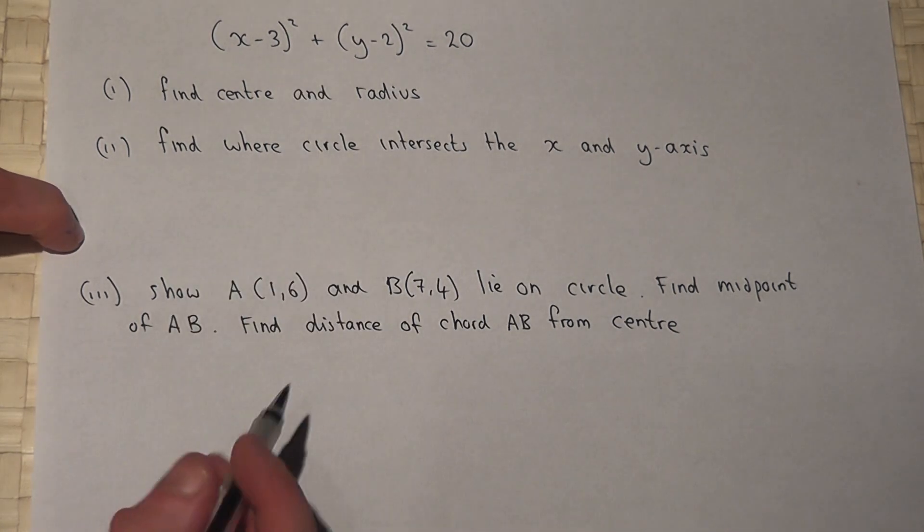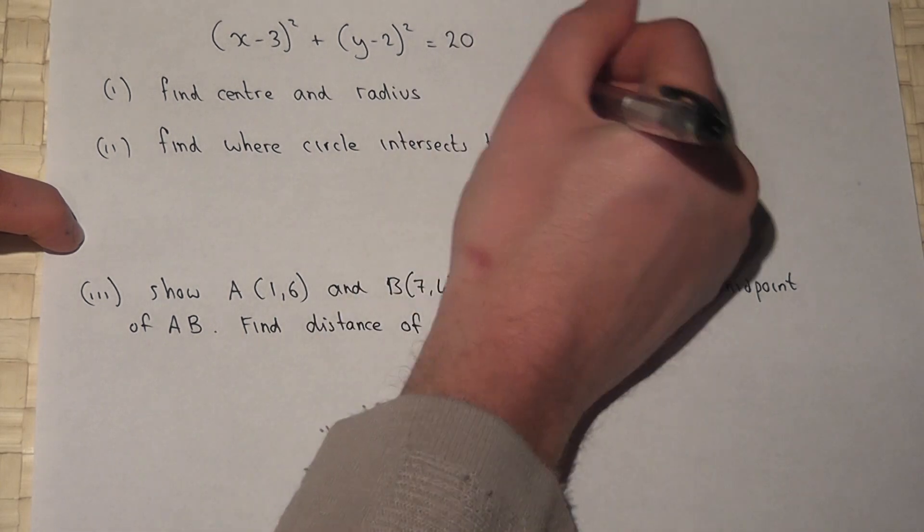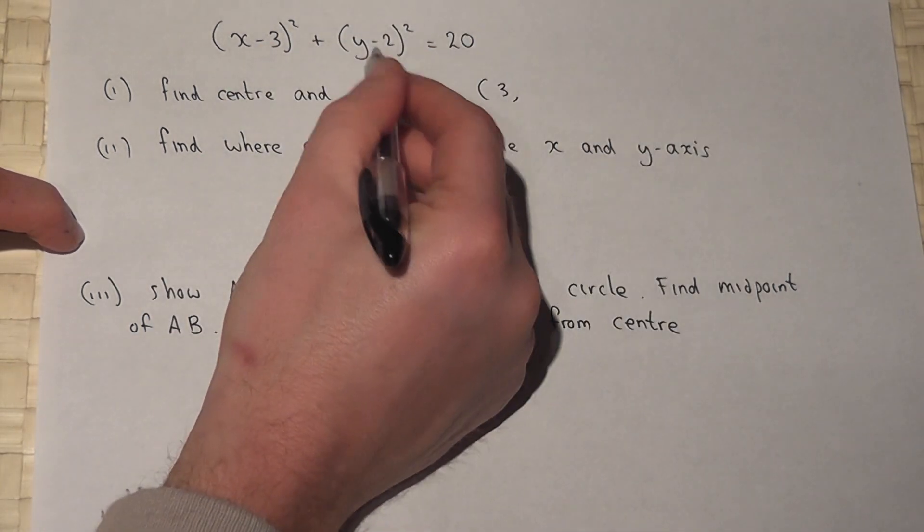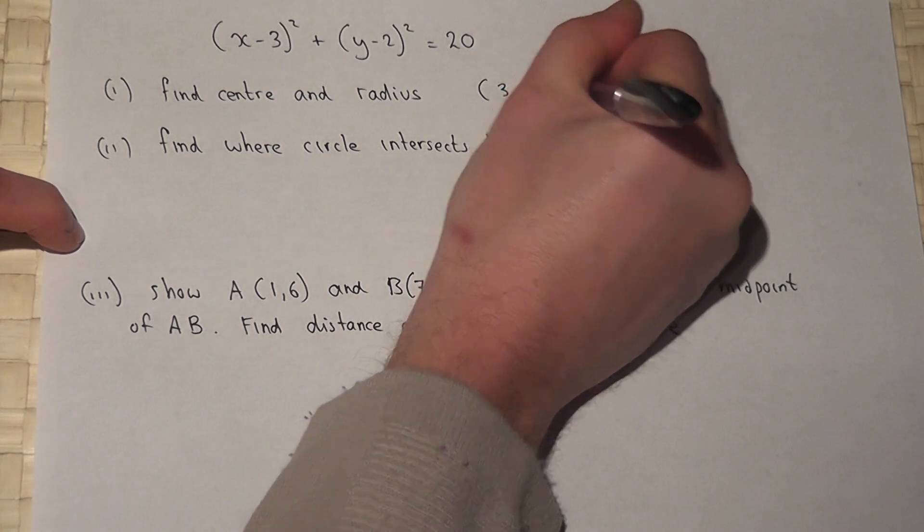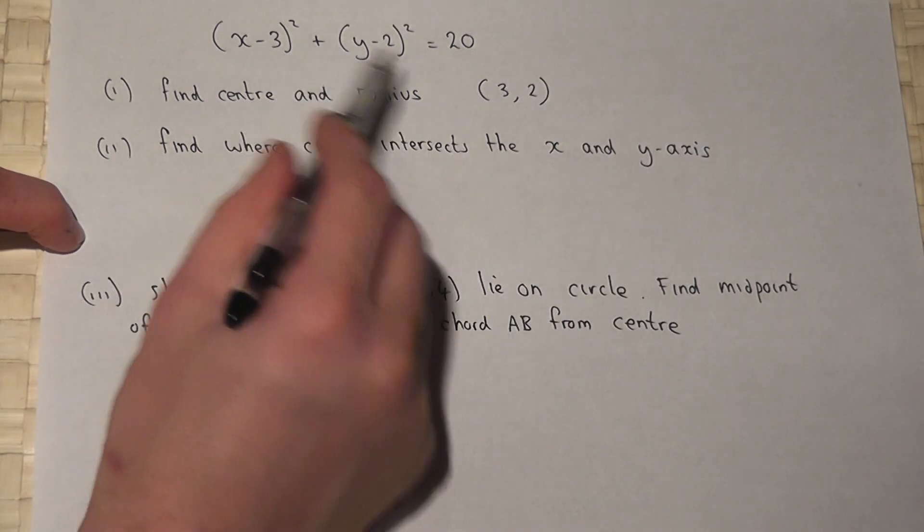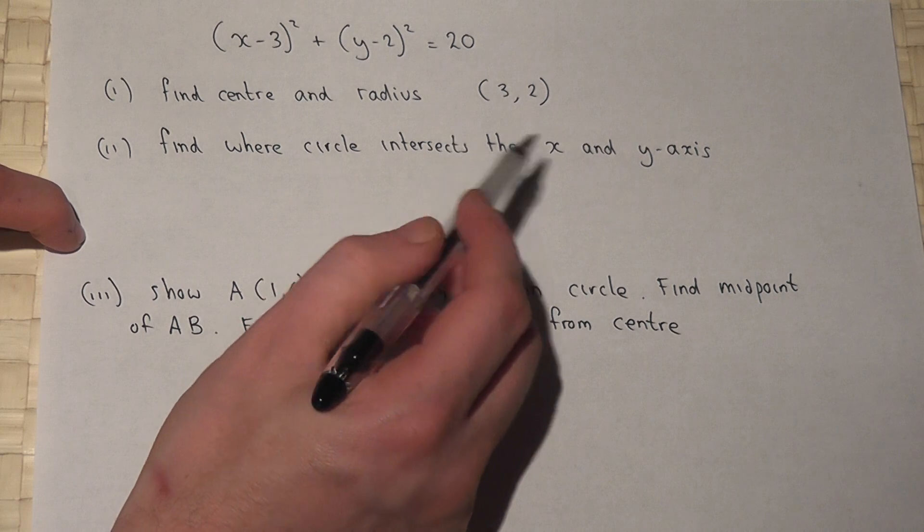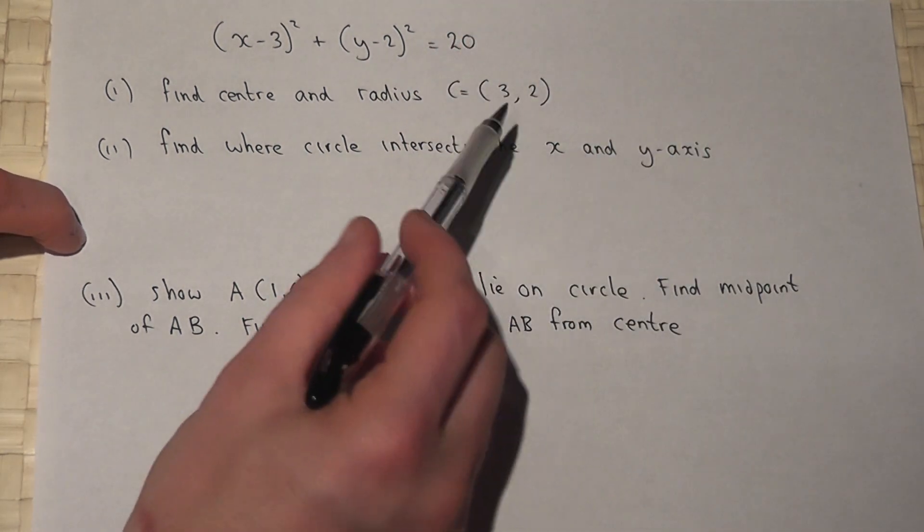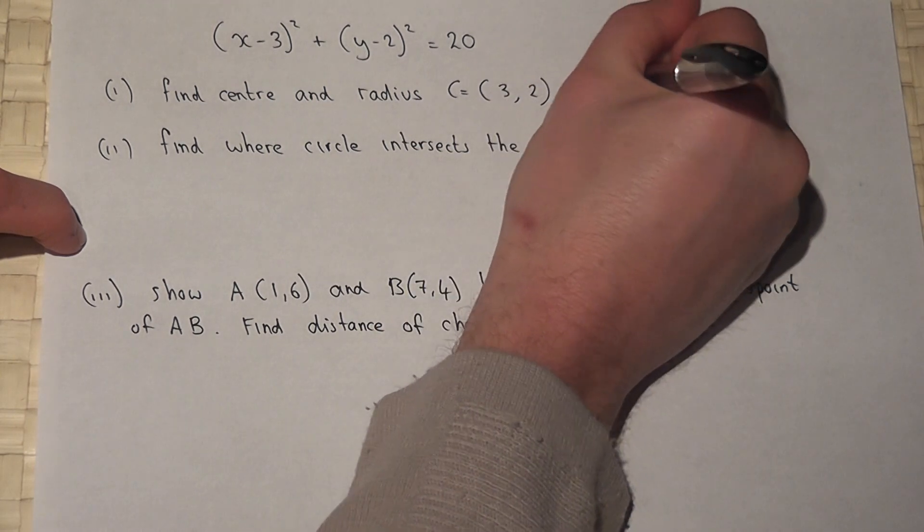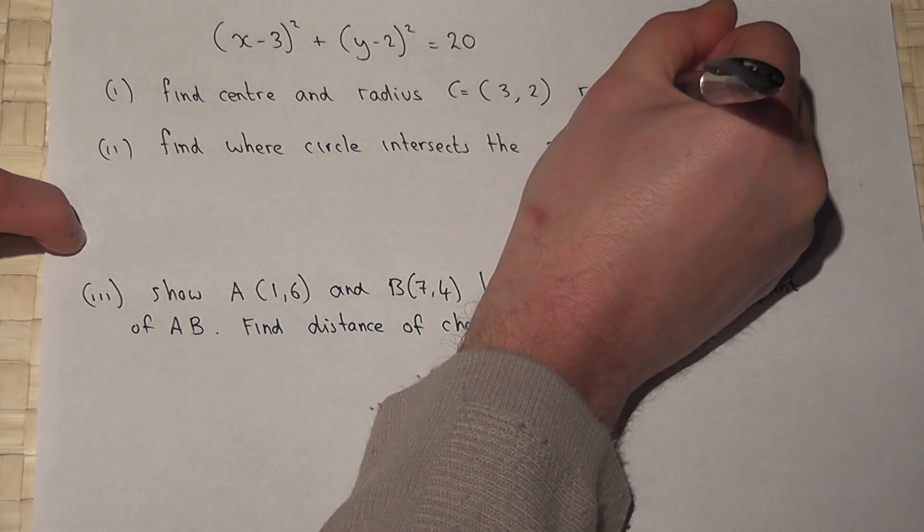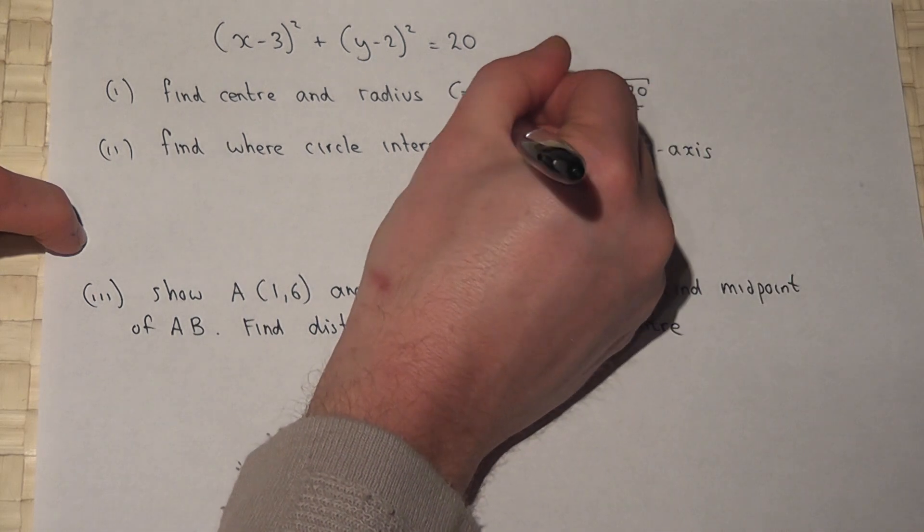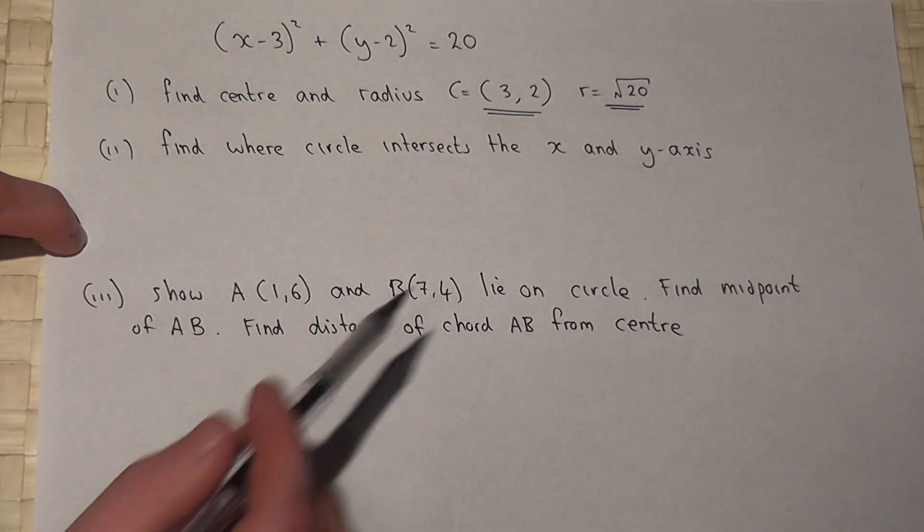The center of this circle is at the coordinate +3, +2. It's always the numbers in the brackets with the signs changed. And the radius is just the square root of 20. So I'll leave that as a surd. These are just facts from the equation of the circle.